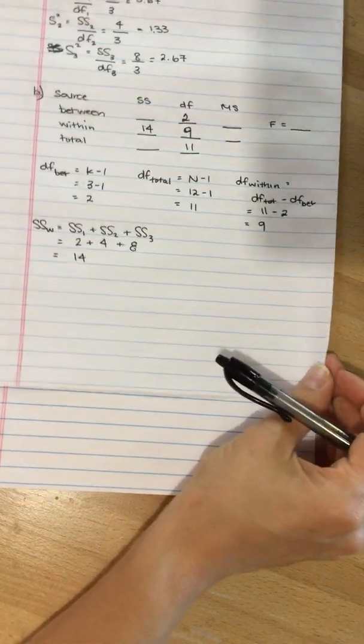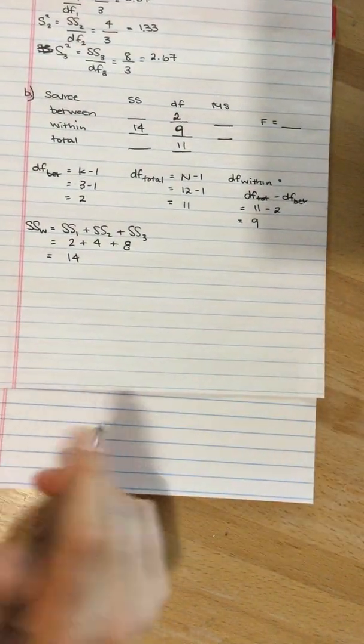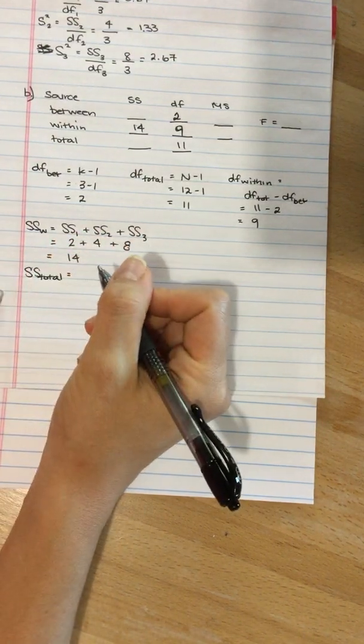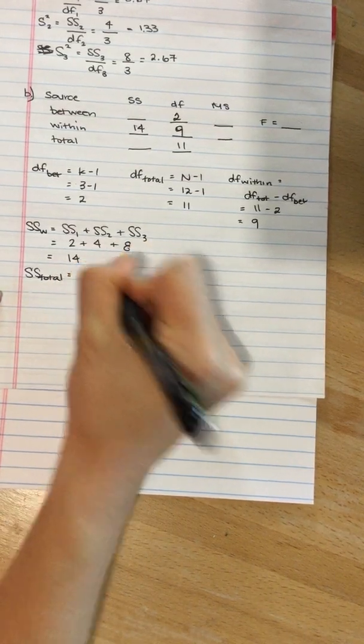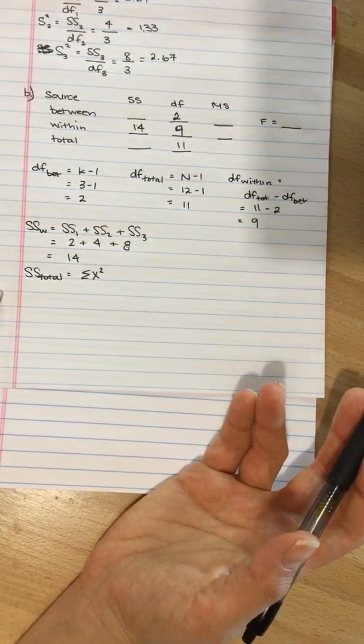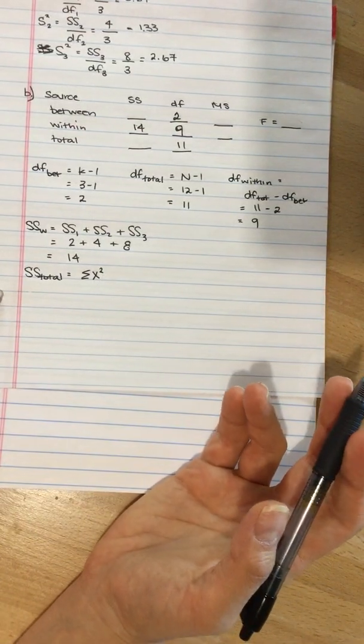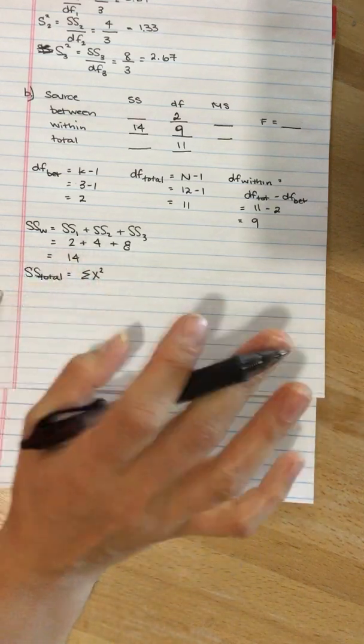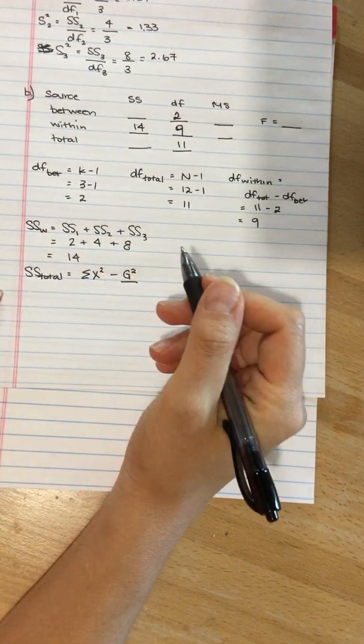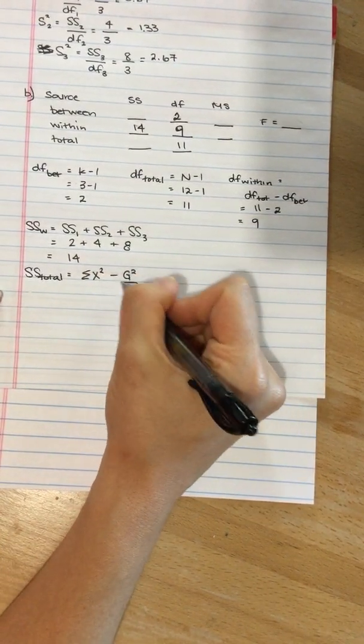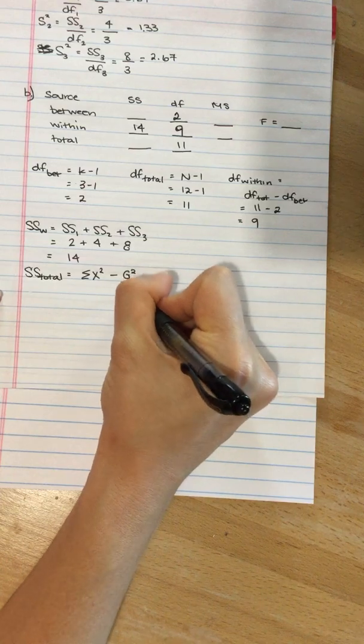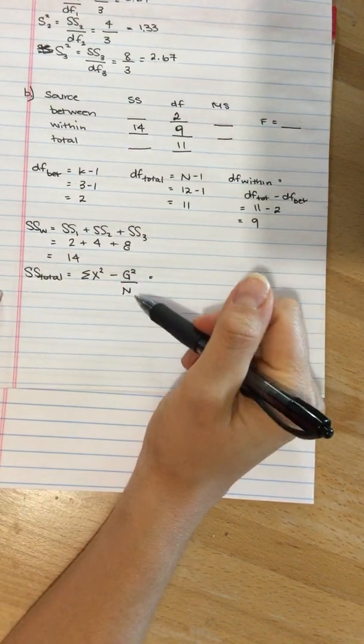I'm going to need more space before we're done. Next we can do sum of squares total. The formula is the sum of x squared, so that's take each x, square it, and add it up. We are given all of the raw data, so we could calculate that by hand, but that's also given to us in the question, so we're not going to waste our time calculating it by hand. Subtract big G squared, that's the grand total, so the sum of all x's, divided by n.